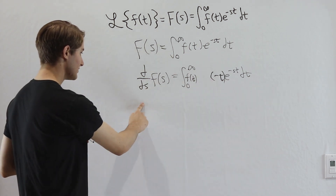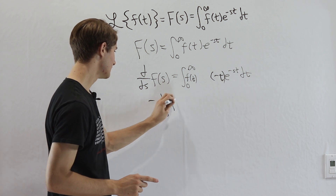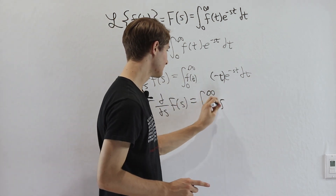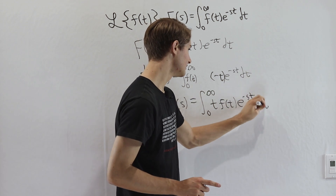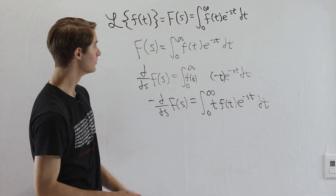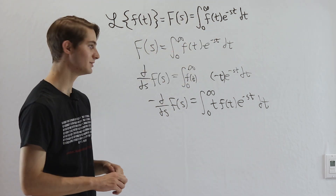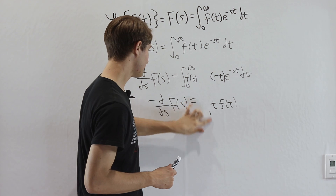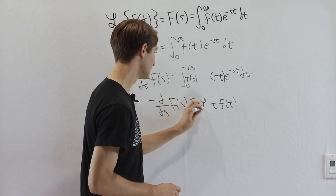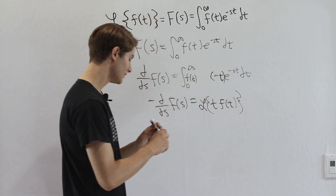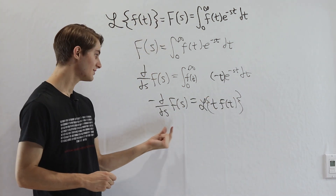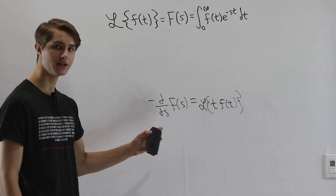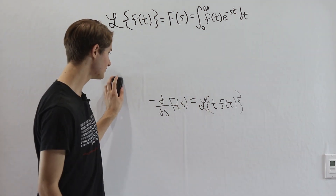Bringing the negative to the other side, negative d/ds of F(s) equals the integral from 0 to infinity of t times f of t times e to the negative st dt. Notice the right side looks exactly like the Laplace transform definition — it is in fact the Laplace transform of t·f(t). So our first identity is: the Laplace transform of t·f(t) equals negative the derivative with respect to s of F(s), where F(s) is the Laplace transform of f.